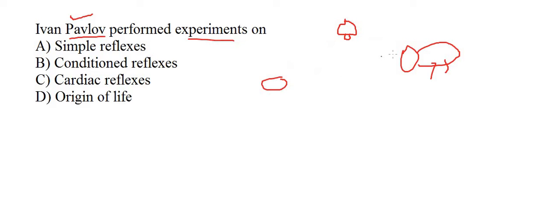The dog developed a habit. When the dog heard a bell ring, it expected food to come. Eventually, Pavlov rang the bell without providing food, but the dog still used to produce saliva, waiting for the food to come.